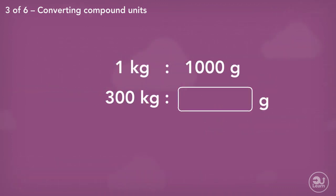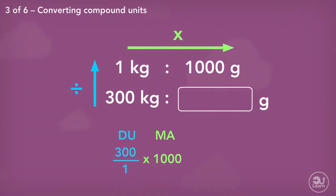Next, we convert 300 kilograms to grams using the relationship 1 kilogram to 1,000 grams. Using our Duma technique, we divide up and multiply across. 300 divided by 1 times by 1,000 equals 300,000 grams.